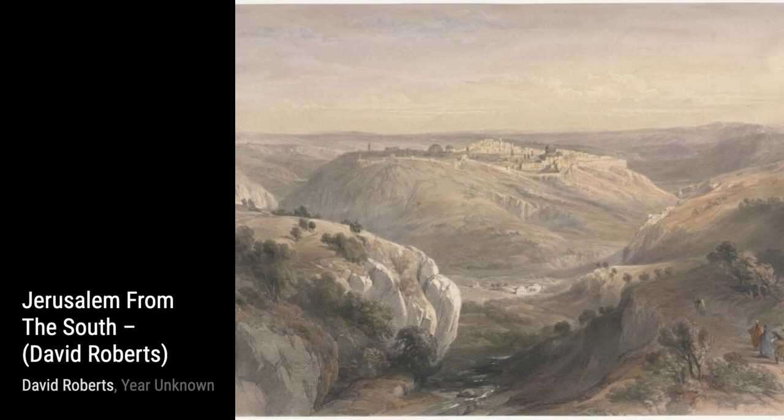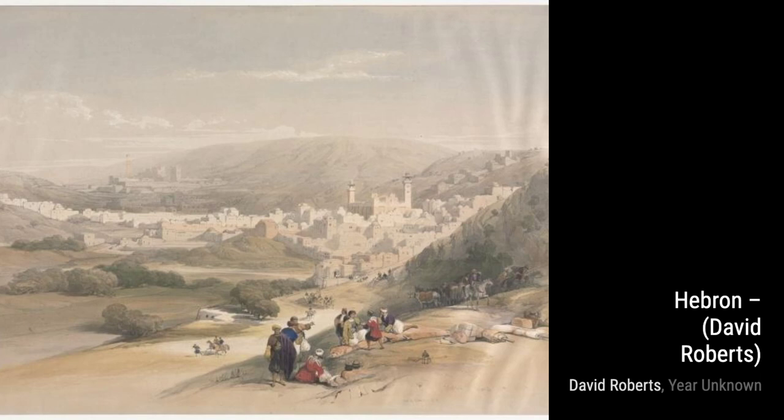Let's start with Circular Temple at Baalbeck. In this painting, Roberts transports us to the ancient ruins of Baalbeck, capturing the grandeur and intricate details of the Circular Temple.